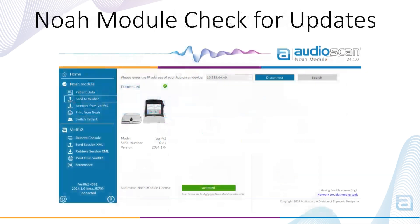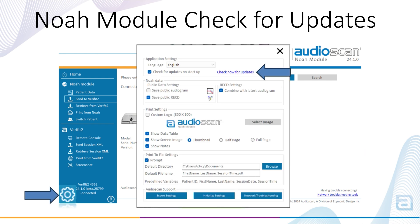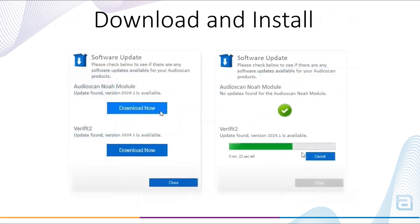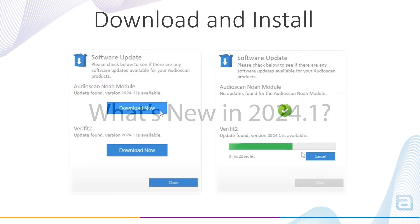Software updates are also available via the AudioScan NOAA module by selecting Settings and clicking Check Now for updates. Note that a checkmark beside Check for updates on startup means that you will be notified when new software versions for your AudioScan equipment and NOAA module are available. If an update is found, you will be prompted to select Download and then install the software.